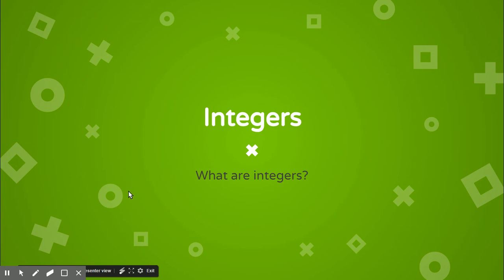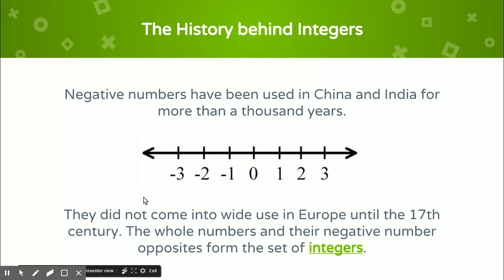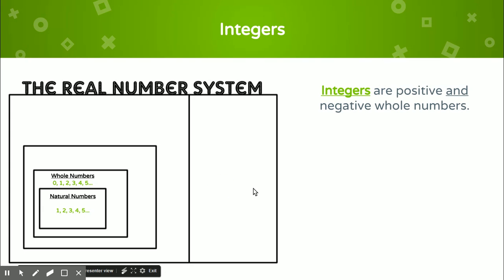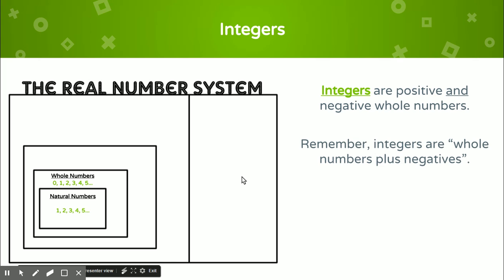Now, what are integers? Negative numbers have been used in China and India for more than a thousand years, but they did not come into wide use in Europe until the 17th century. The whole numbers and their negative opposites form what is called integers. So integers include negative numbers, positive numbers, and zero — basically, positive and negative whole numbers. The song says integers are whole numbers plus negatives. Examples include negative three, negative two, negative one, zero, and so on.